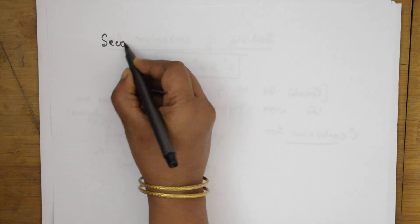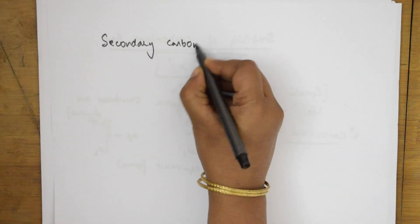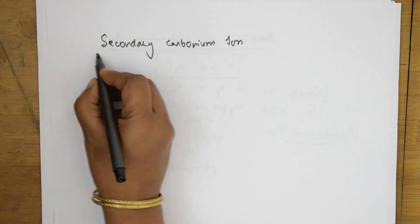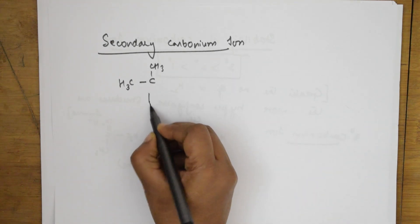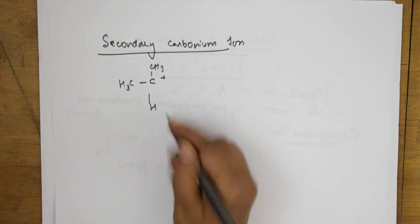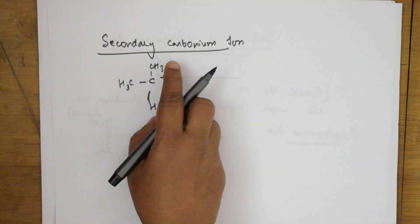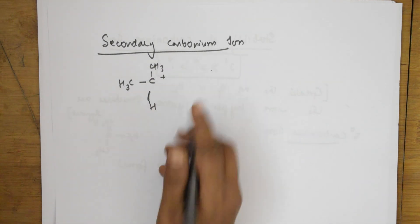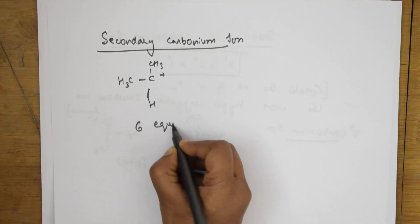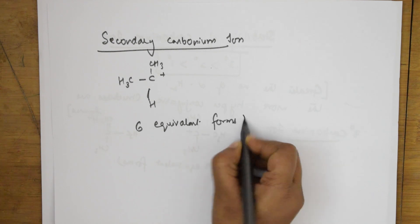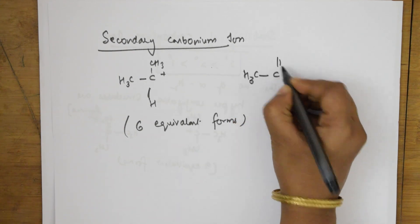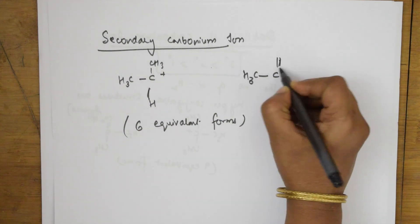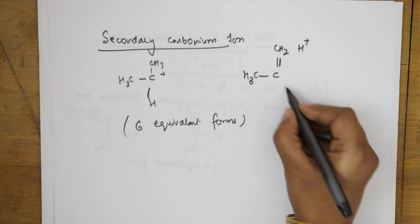For the secondary carbonium ion — CH3 and CH3 attached to the positive carbon with one H — there are two alkyl groups. How many alpha hydrogens? 3 and 3, giving 6. So 6 equivalent hyperconjugation forms can be formed. One form looks like: CH3 with a double bond, CH2, H+, and H. Both sets of three hydrogens will shift, giving 6 equivalent forms.